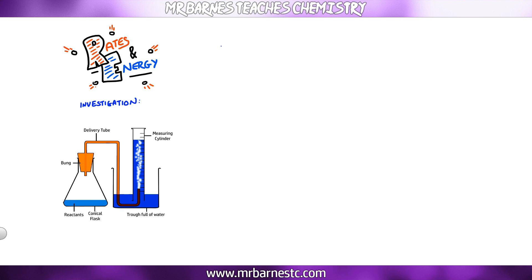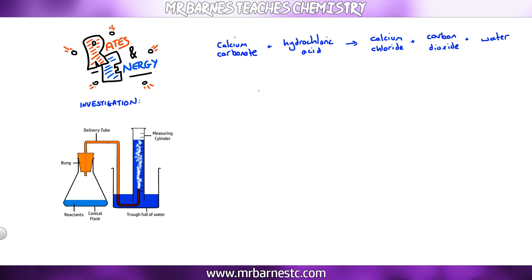We're going to use some equipment that you can see on the left hand side here and carry out the reaction where calcium carbonate — marble chip — reacts with hydrochloric acid, forming calcium chloride, carbon dioxide and water. The symbol equation: CaCO₃ (solid) + HCl (aqueous) → CaCl₂ (aqueous) + CO₂ (gas) + H₂O (liquid).